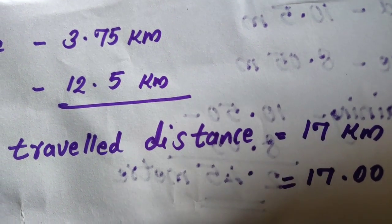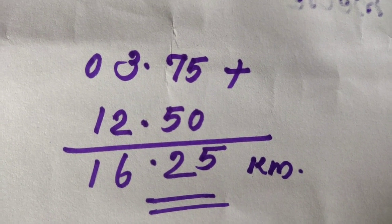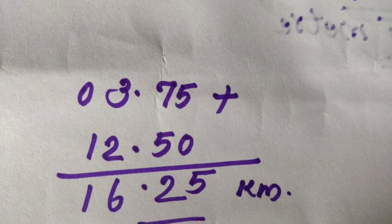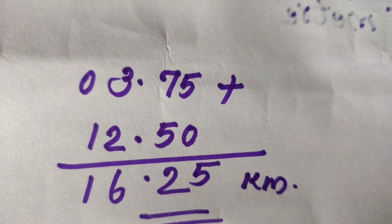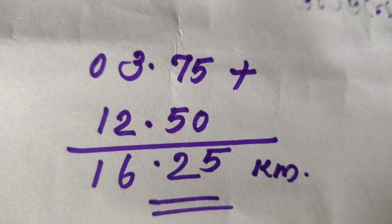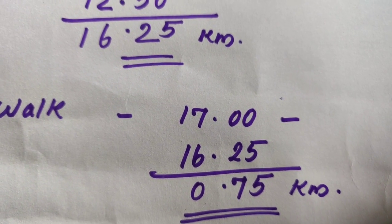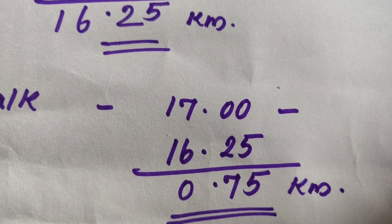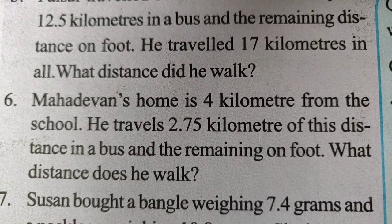To find the walking distance, we first add the bicycle and bus distances: 3.75 plus 12.50. Adding: 0 plus 5 is 5; 7 plus 5 is 12, carry 1; 3 plus 2 plus 1 is 6. So bicycle plus bus equals 16.25 km. Then 17.00 minus 16.25 equals 0.75 km walked.